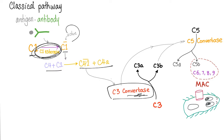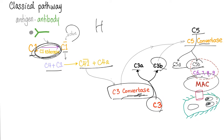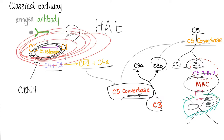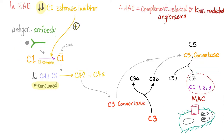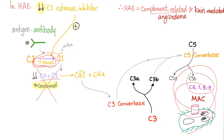C3 convertase converts C3 into C3a and C3b. C3b together with C3 convertase forms C5 convertase, which converts C5 into C5a and C5b. C5b together with C6, 7, 8, and 9 forms the MAC — the membrane attack complex — which will attack. In hereditary angioedema, there is no C1 esterase inhibitor, so C1 esterase is left uninhibited, activating the complement cascade until it destroys itself. C4 and C2 are consumed and the MAC is overactivated. That's why we call it complement-related, kinin-mediated angioedema.